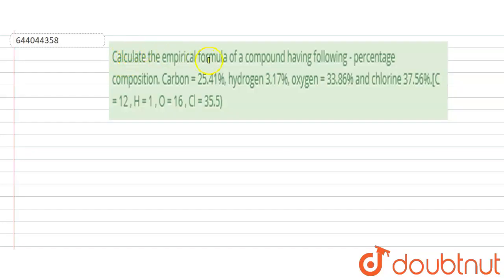The question is calculate the empirical formula of a compound having following percentage composition: carbon is 25.41%, hydrogen 3.17%, oxygen 33.86%, chlorine 37.56%. We have to calculate the empirical formula. Empirical formula is the simplest ratio of the atoms present in a compound.